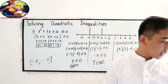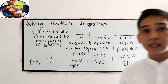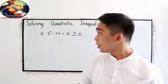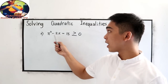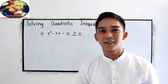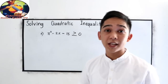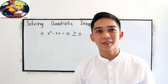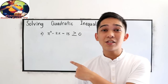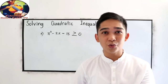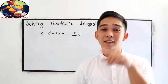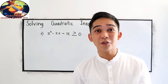Now, I want you to answer this problem. Problem number 2 is: x squared minus 2x minus 15 is greater than or equal to 0. Please try to answer that given, and if you are done answering, please proceed to our next video to check your work — I will put the link in the description box. Please invite your classmates to visit our channel. Thank you for watching.